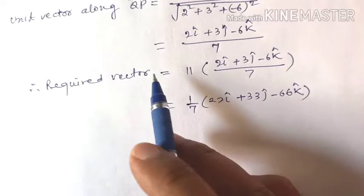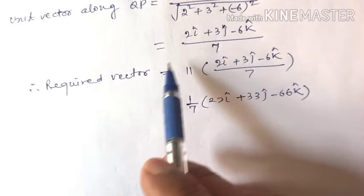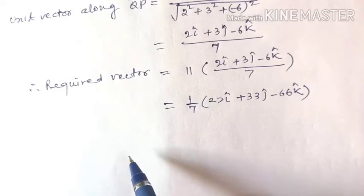This is the required vector. So we first found PQ vector, then since we needed the vector along QP (opposite to PQ), we calculated the unit vector along QP and then multiplied it by 11 to get the required vector.